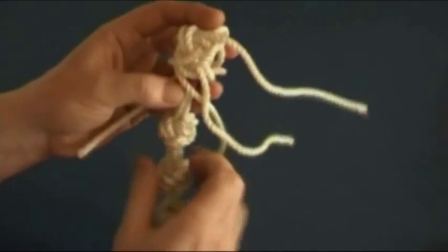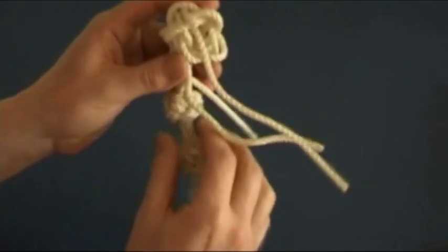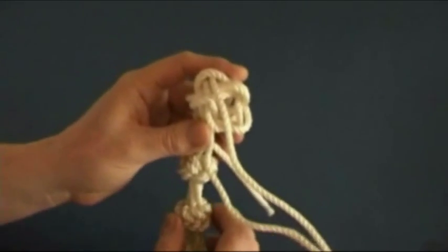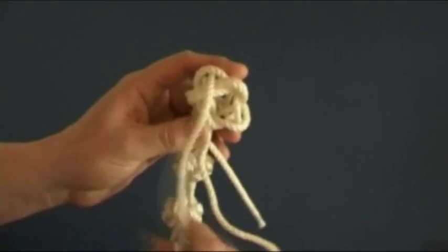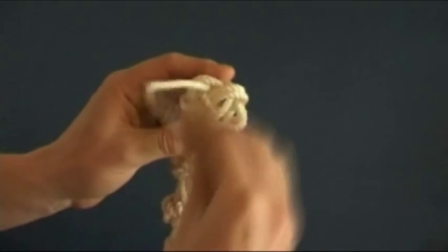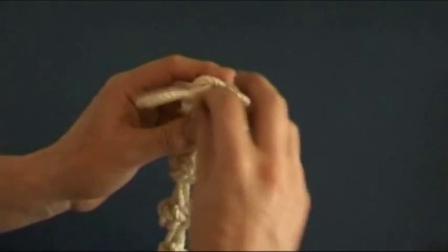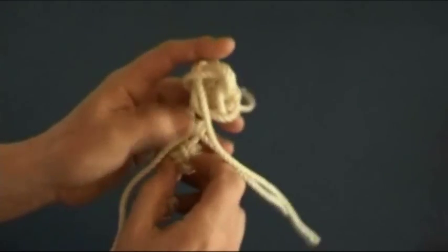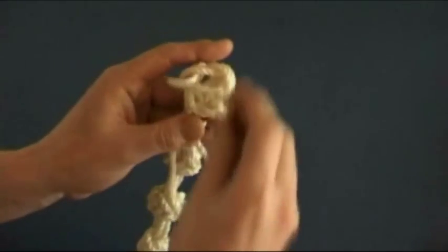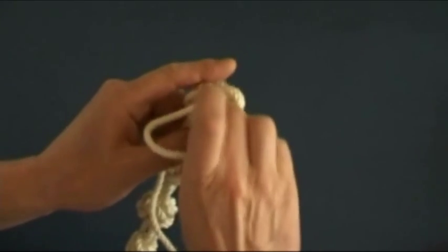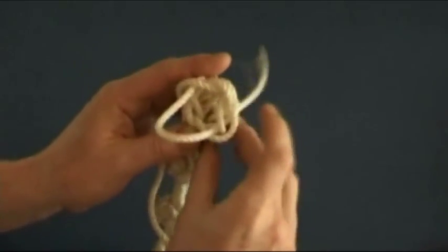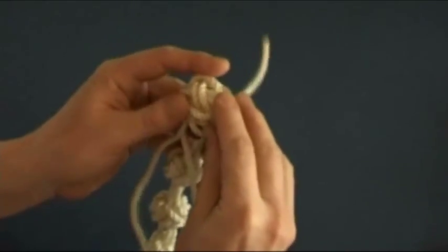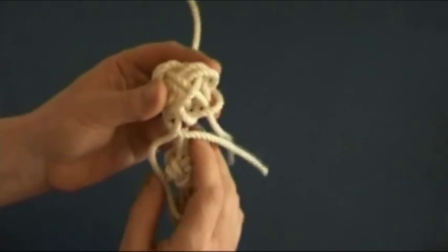And something else that needs practice as well is getting used to how much cord you will need. Because there is nothing worse than getting right near the end of the knot, the end of the bell rope and finding that you have run out. So be quite liberal to start with until you get used to how much cord you need. There we go. Four leads all through the bottom.